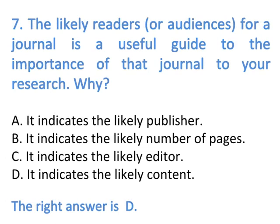Number 7: The likely readers or audiences for a journal is a useful guide to the importance of that journal to your research. The right answer is D, which is it indicates the likely content.